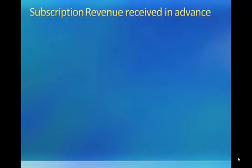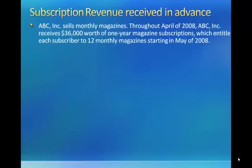A second example of this type of adjusting entry is subscription revenue — specifically when you receive subscription revenue in advance of sending out subscriptions. Similar to rent received in advance, if a firm receives subscription payments at or before the beginning of when they start sending out magazines, they must establish a liability account for the full amount received, called unearned subscription revenue. As time goes by and the subscription revenue is earned, they can record subscription revenue and reduce the unearned subscription revenue liability through an adjusting entry at each reporting date.